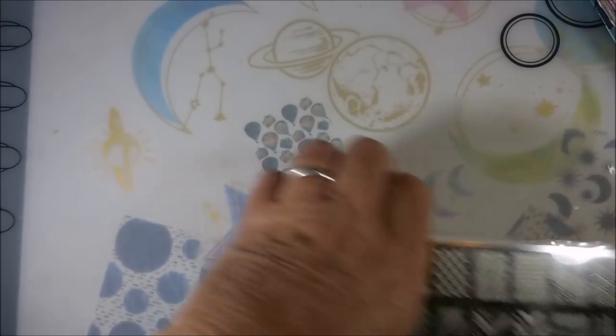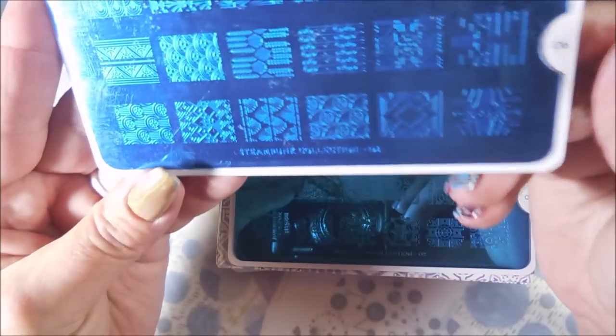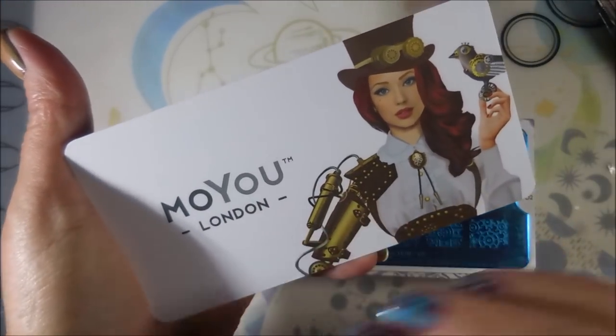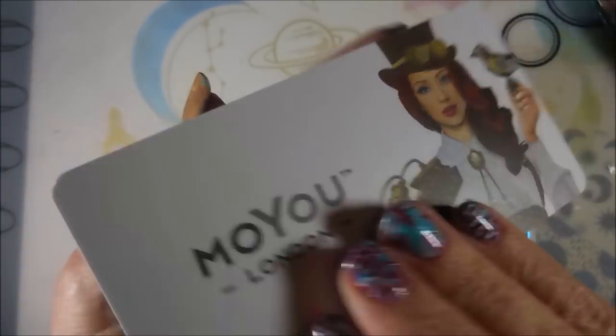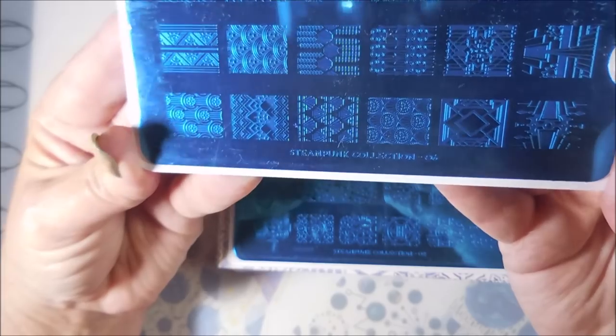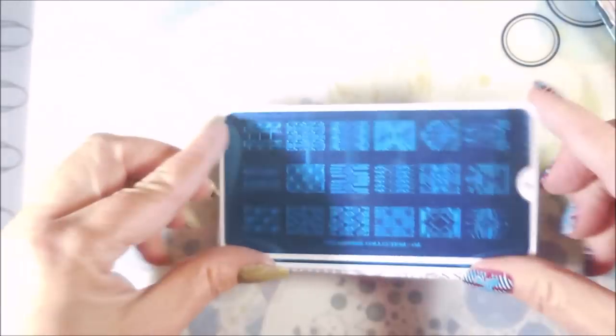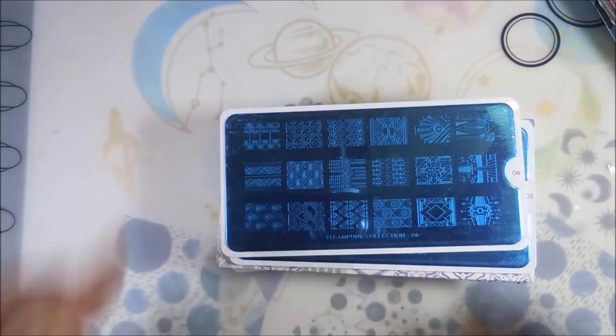Now we're going to move on to the rectangle plates. This is from Moyou London. I don't have any Moyou London's at all. I've always wanted them. I'll go load my basket up and then I never go through with it. This is from the steampunk collection, steampunk 06. Look at all those.